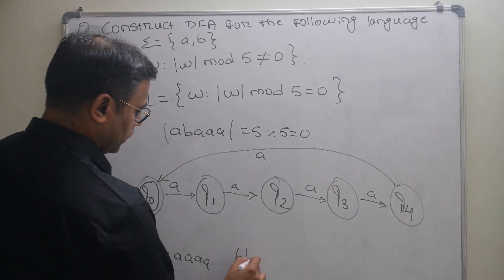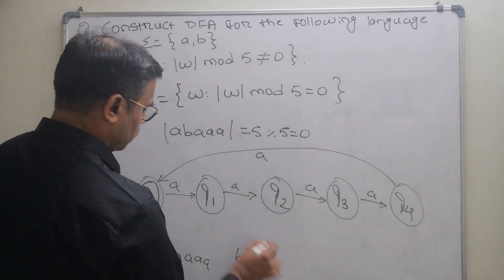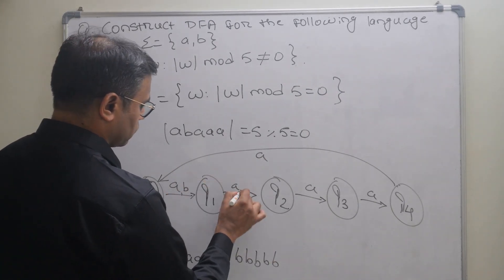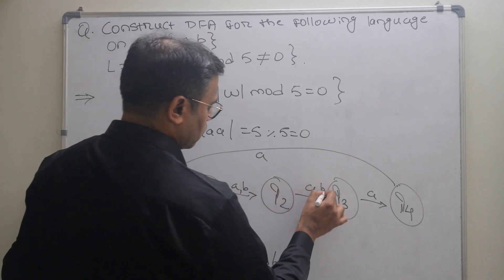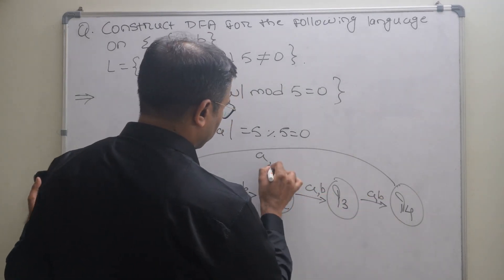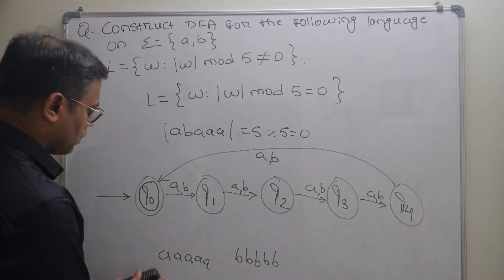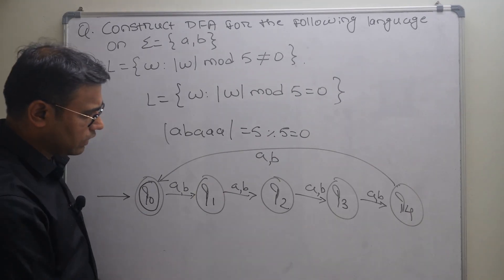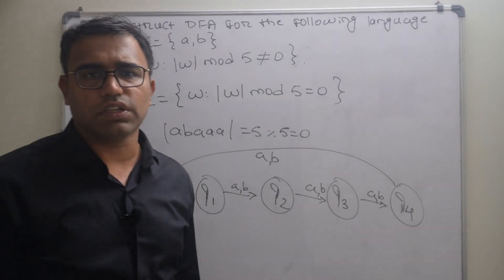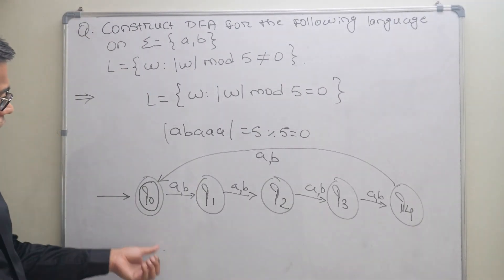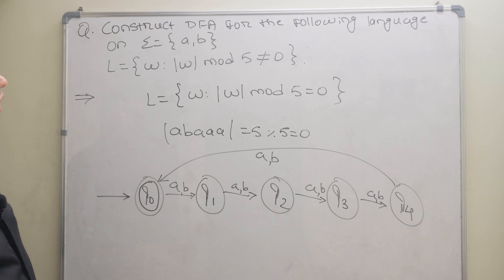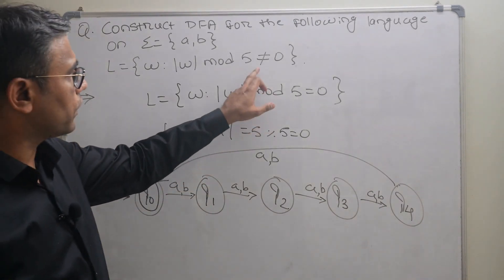Similarly, if we take 5 b's, it will be the first b, second b, third b, fourth b, and fifth b. Now if you take any length of the string which is a multiple of 5, it will accept. Now what I have told you: we have to find out |w| mod 5 not equal to 0.